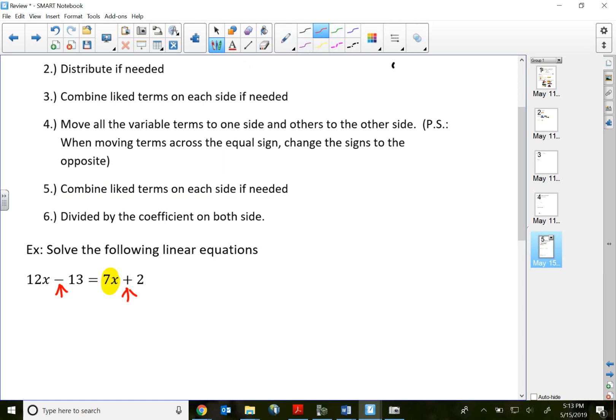Because if I always move the variable term to the larger side, it will keep my variable term positive at all times. So when I divide by the coefficient at the end, I don't have to divide by negative coefficient. I will always divide by positive coefficient.